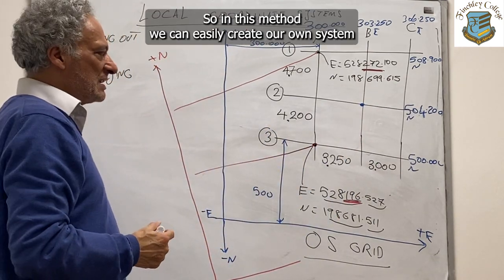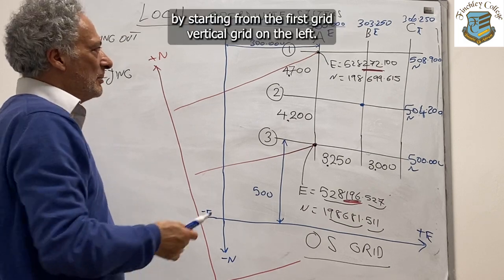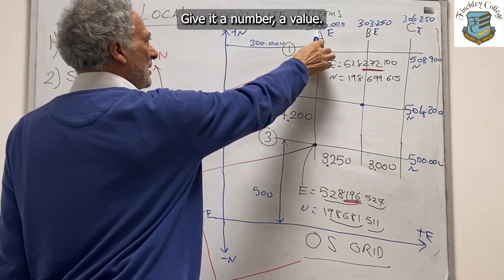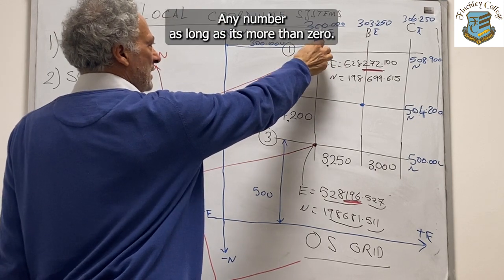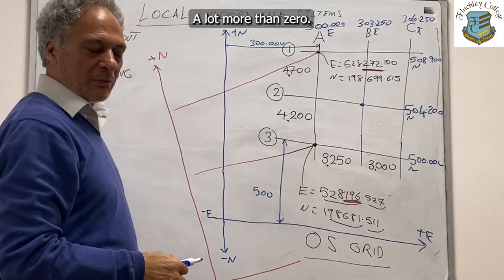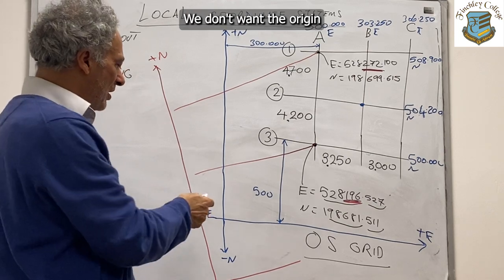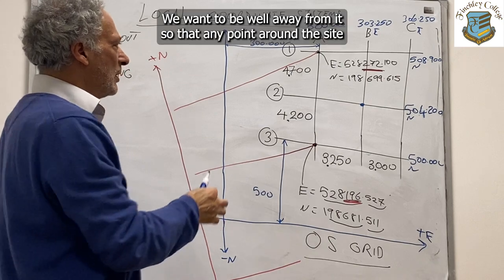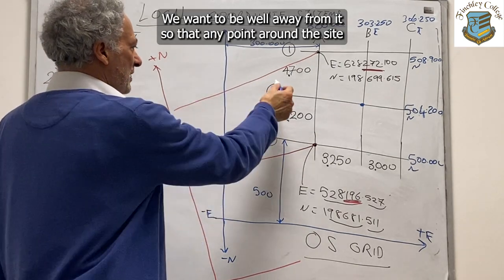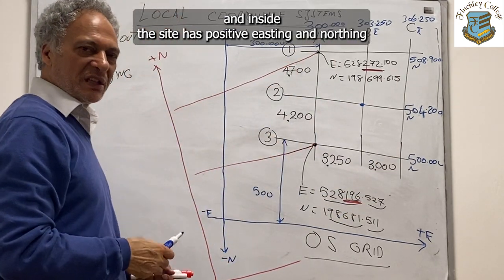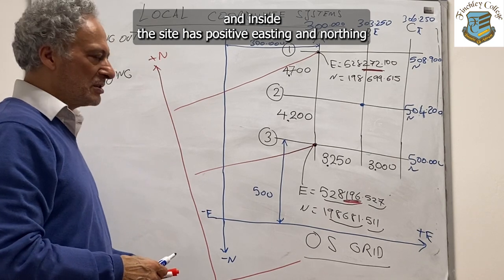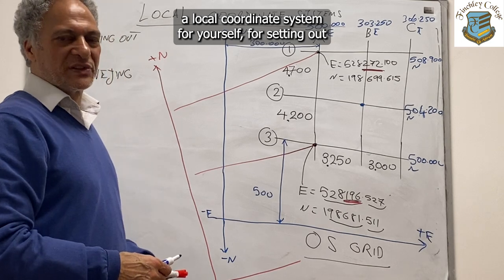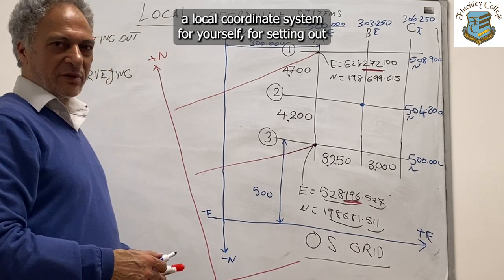In this method we can easily create our own system by starting from the first vertical grid on the left, giving it any value — as long as it is well more than zero. We don't want the origin to be anywhere near our building site. We want it well away so that any point around the site and inside the site has positive easting and positive northing. And that is how you create a local coordinate system for setting out.